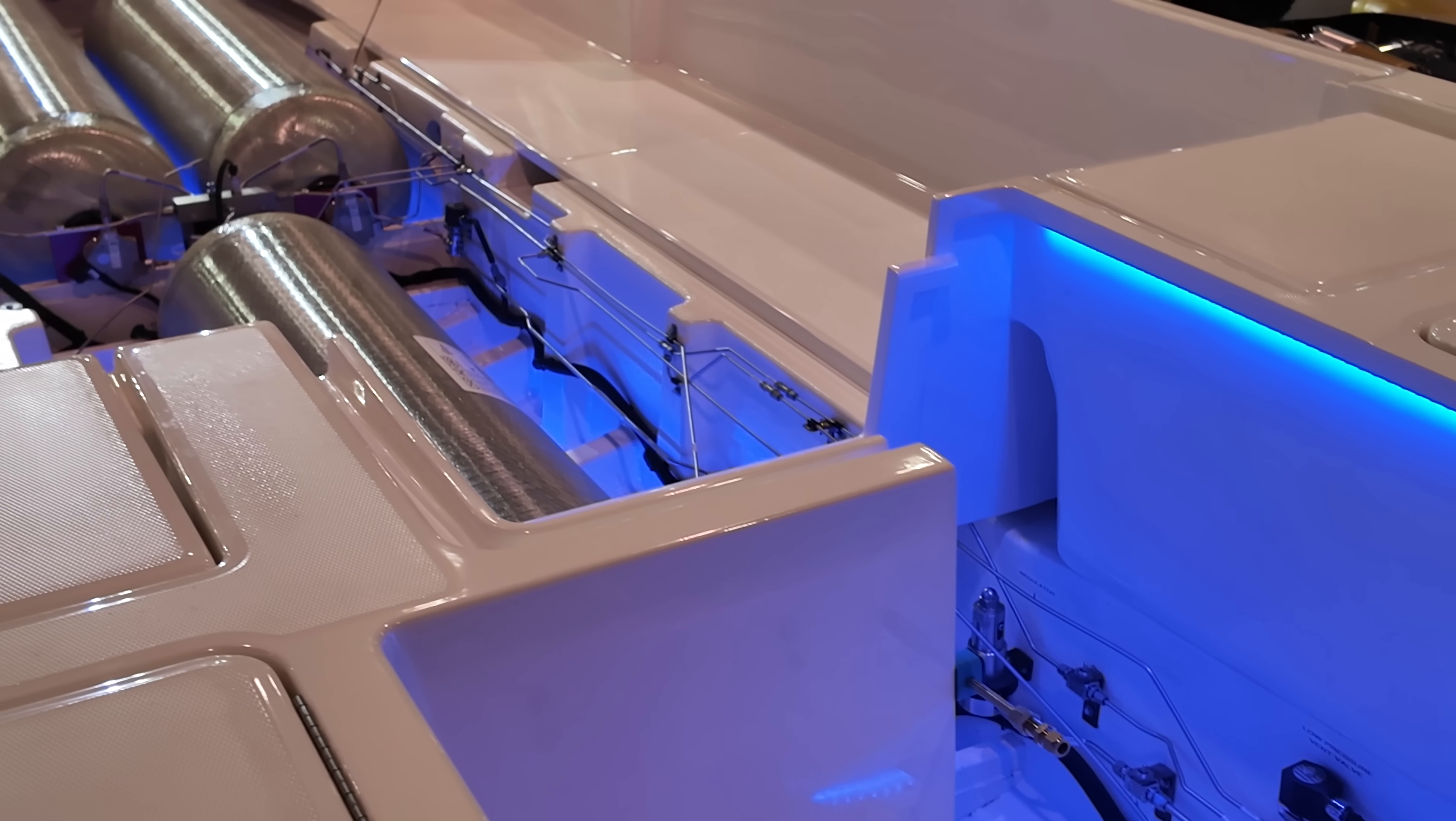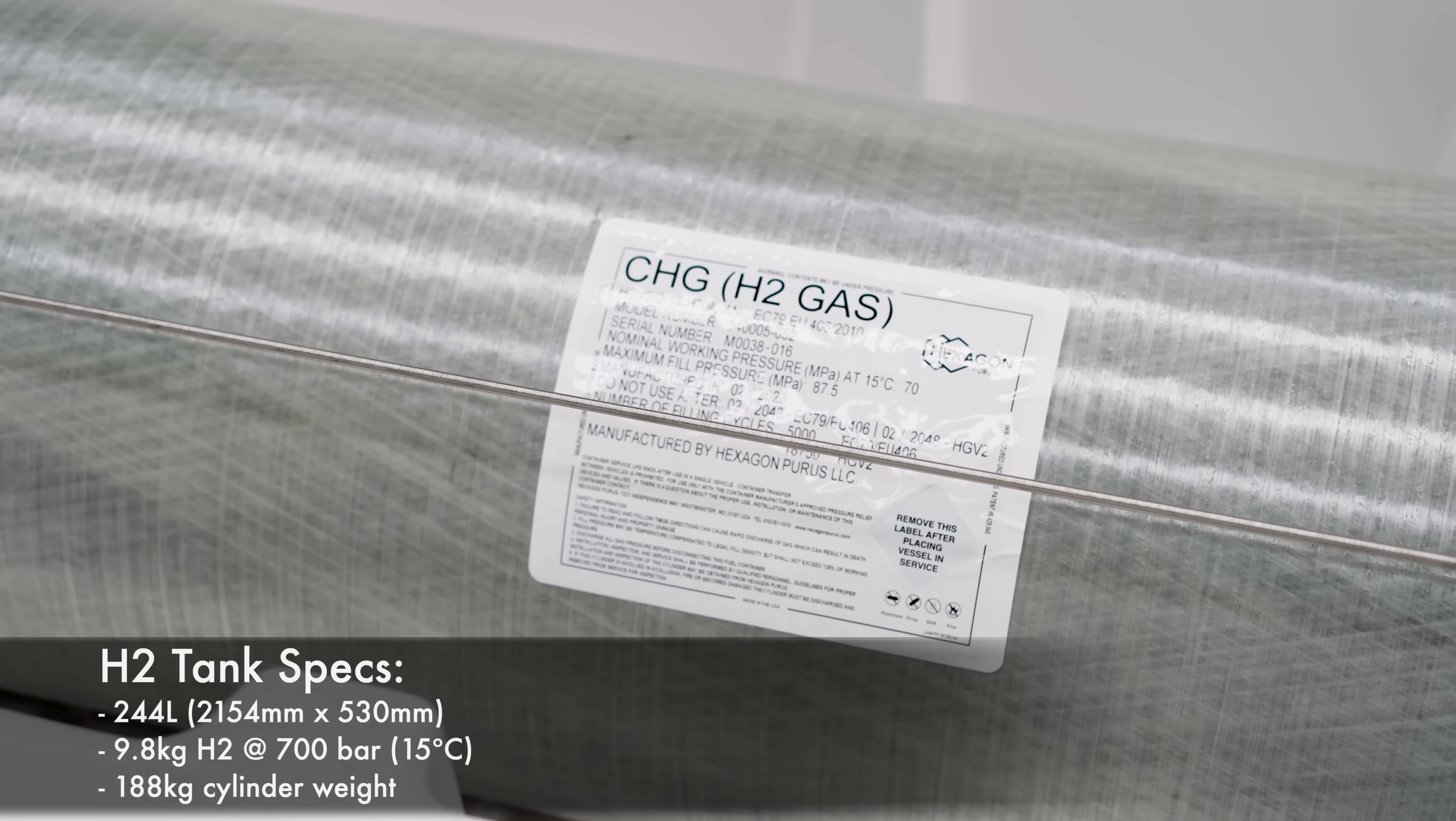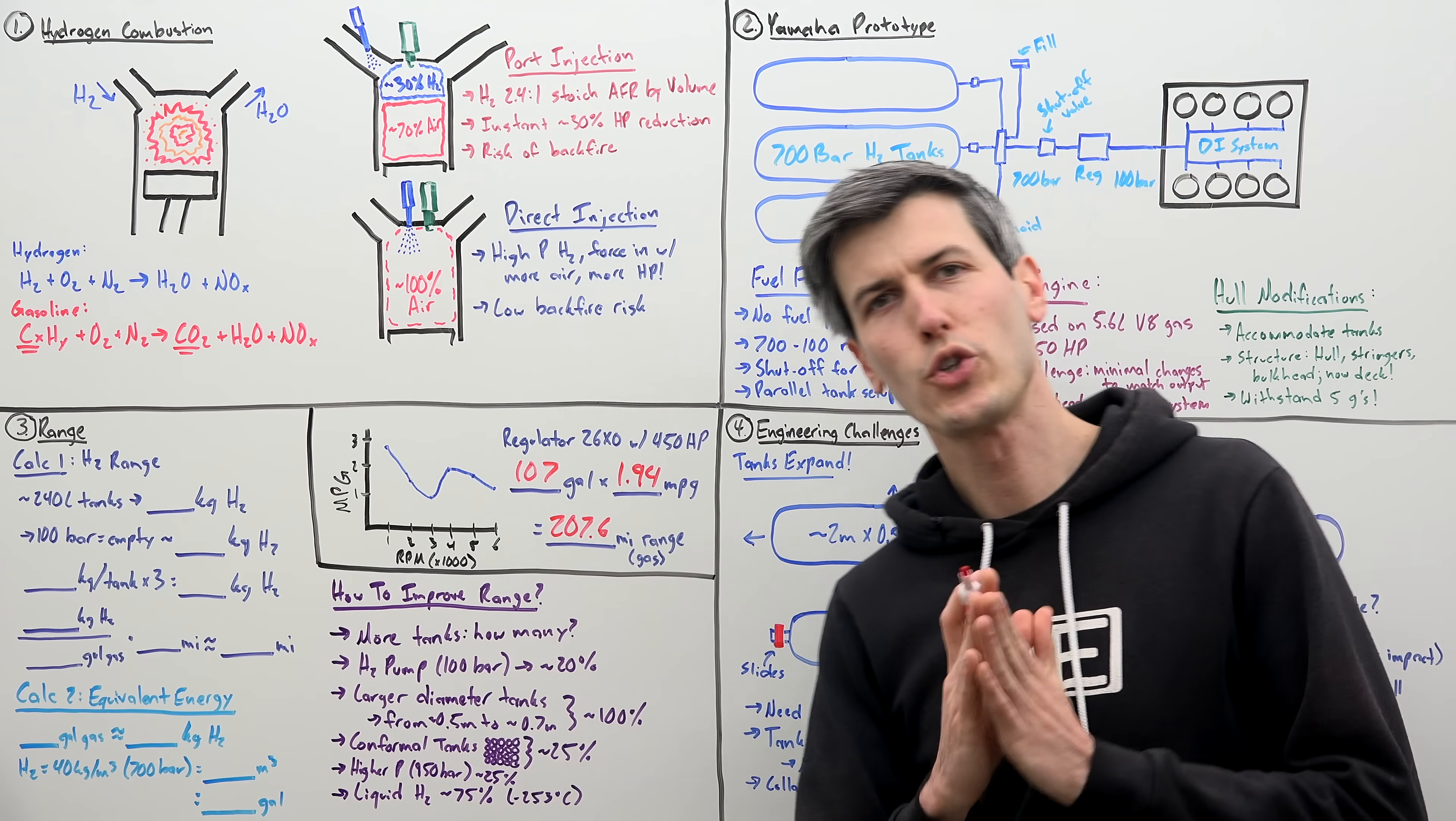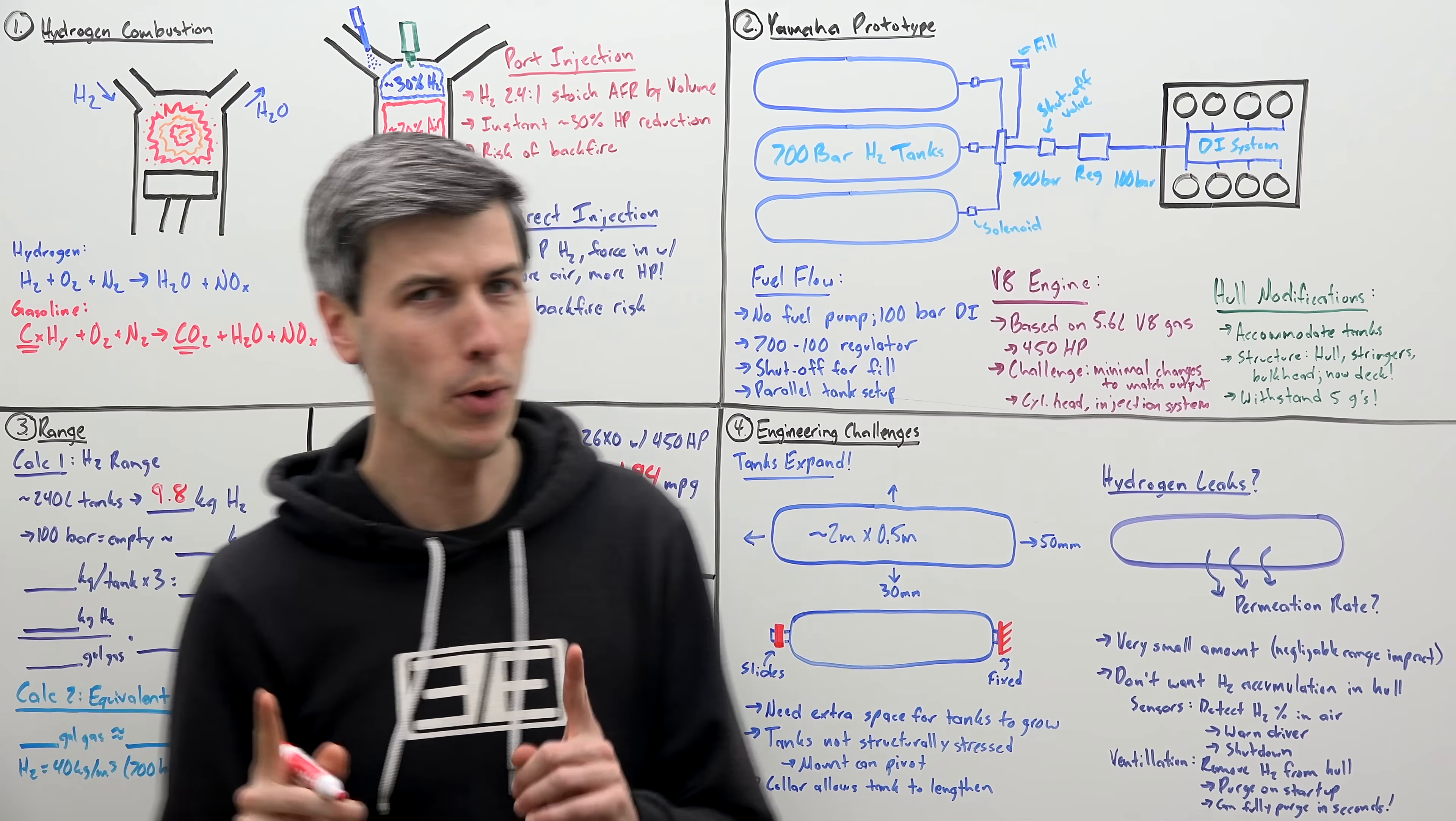Alright, so now looking at the prototype, we need to figure out how much hydrogen we have stored between these three hydrogen tanks. Luckily, there's a label on the tanks so we can look up the specs for this tank which looks to be about 240 liters and they store hydrogen at 700 bar or 10,000 PSI. Alright, so a 240 liter tank storing hydrogen at 700 bar is going to give us about 9.8 kilograms of hydrogen.